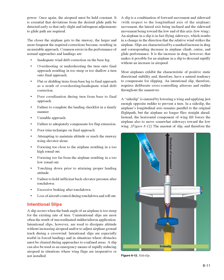Intentional Slips. A slip occurs when the bank angle of an airplane is too steep for the existing rate of turn. Unintentional slips are most often the result of uncoordinated rudder/aileron application. Intentional slips are used to dissipate altitude without increasing airspeed and/or to adjust airplane ground track during a crosswind. They are especially useful in forced landings and in situations where obstacles must be cleared during approaches to confined areas, or as an emergency means of rapidly reducing airspeed when wing flaps are inoperative or not installed. A slip is a combination of forward movement and sideward movement, with the lateral axis inclined and sideward movement toward the low wing. An airplane in a slip is in fact flying sideways, resulting in a change in the direction the relative wind strikes the airplane. Slips are characterized by a marked increase in drag and corresponding decrease in climb, cruise, and glide performance.